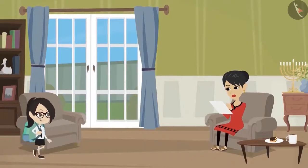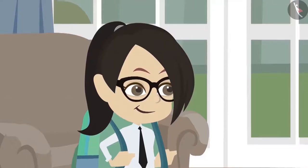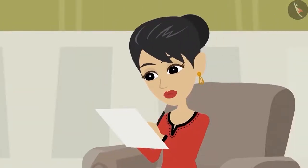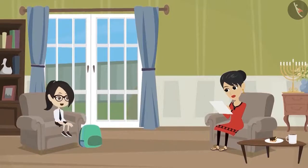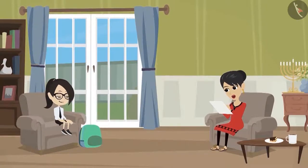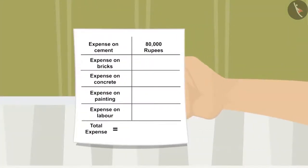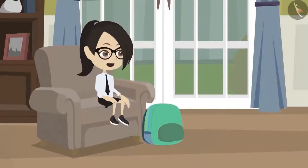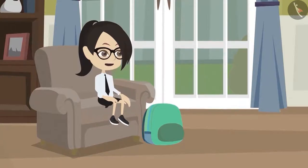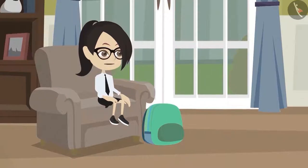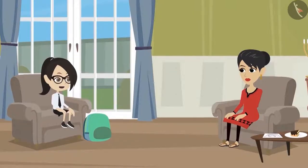Vandana comes home from school and sees that her mom is calculating something on paper. She asks, 'Mother, what are you doing?' Her mother replies, 'Your father and I have decided to build rooms on the top floor of our house, Vandana. Therefore, I am calculating how much the total cost will be.' Vandana says, 'Today in my school I spoke to our engineer, sir. He told us about the expenditure incurred on bricks in making the canteen. Therefore, I can help you in calculating the expenses related to bricks.'